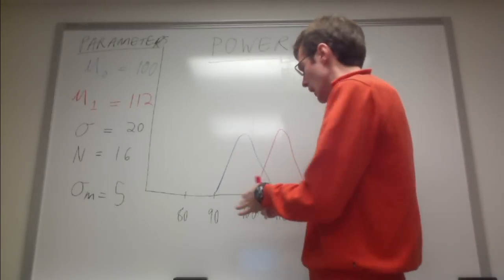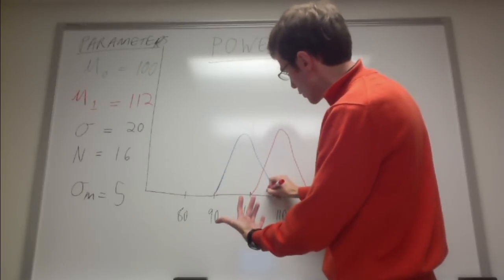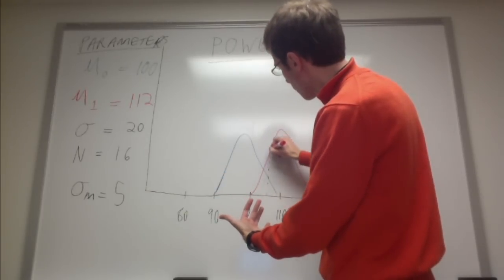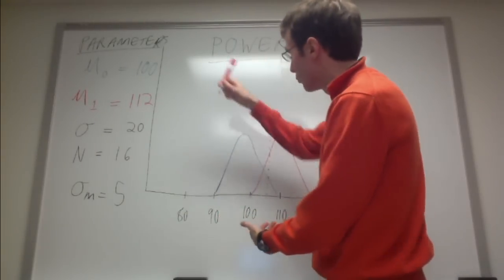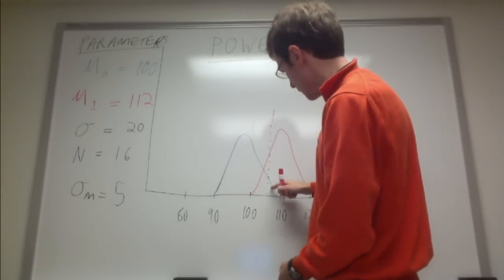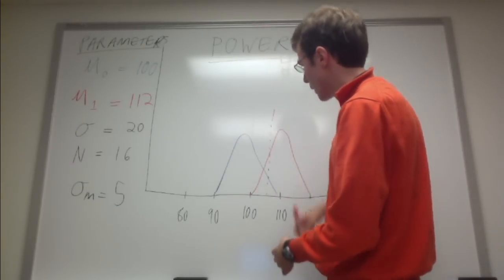Now let's say I have a cutoff represented by this red dashed line at P equals .05 for that null distribution. So about right here, represented by this red dashed line.